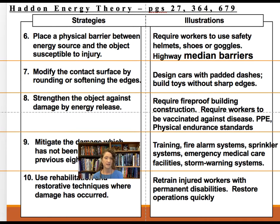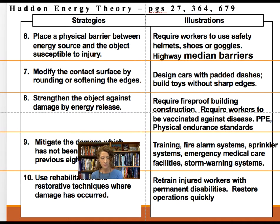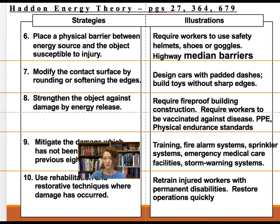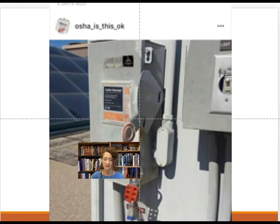Rules nine and ten cover the event and post-event. During the event, you mitigate damage through training so people know what to do. Fire alarm systems and sprinkler systems also lessen the impact of an ongoing event. The last rule is to rehabilitate both the people and the facility and get everything back on board as quickly as possible.